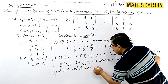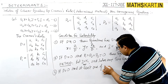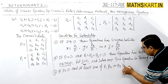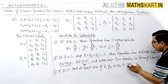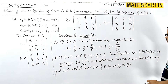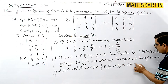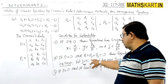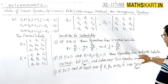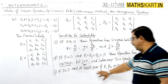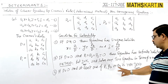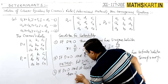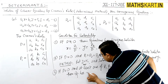Third condition: if D is zero and at least one of D1, D2, or D3 is non-zero, then the equations have no solution.